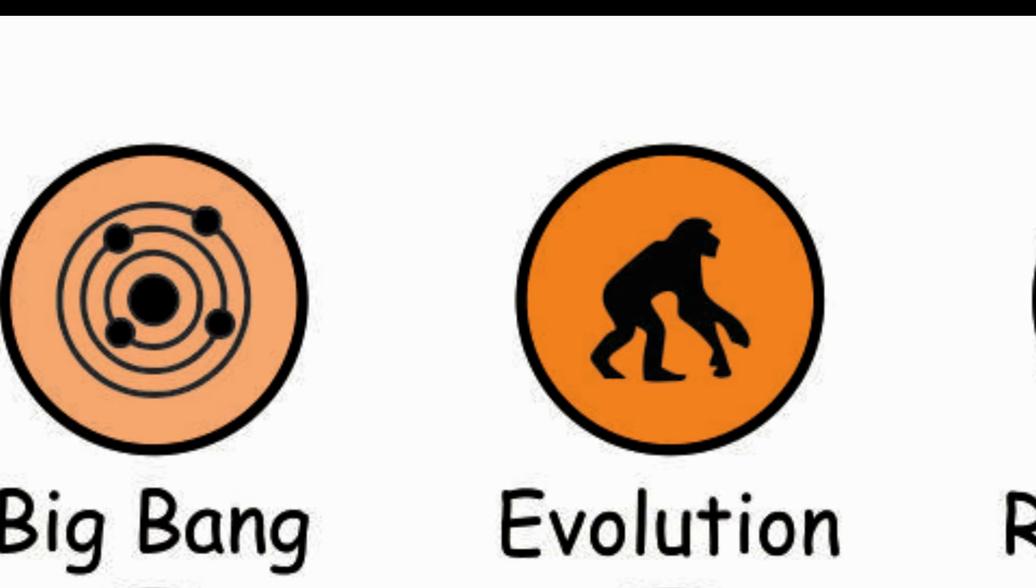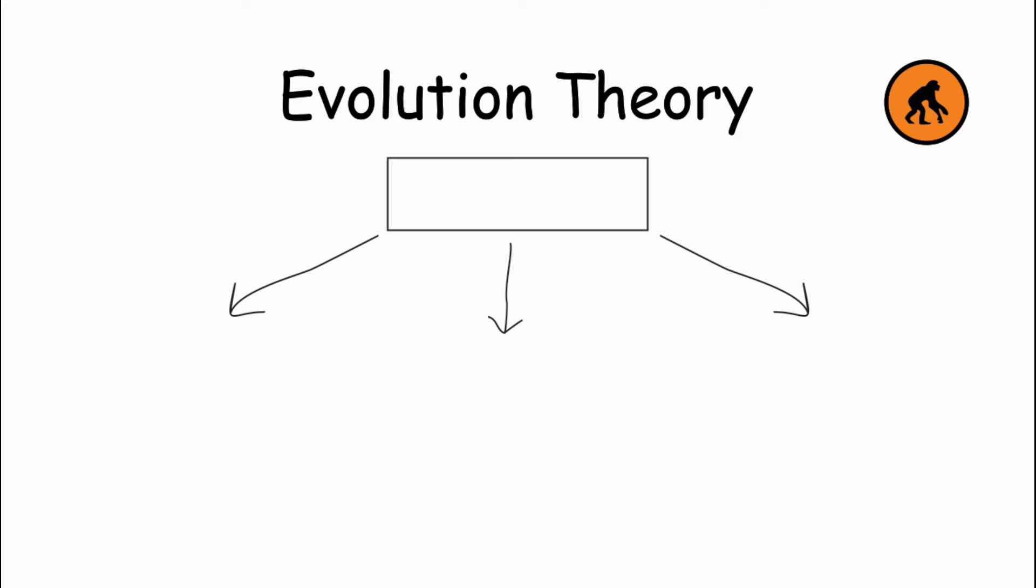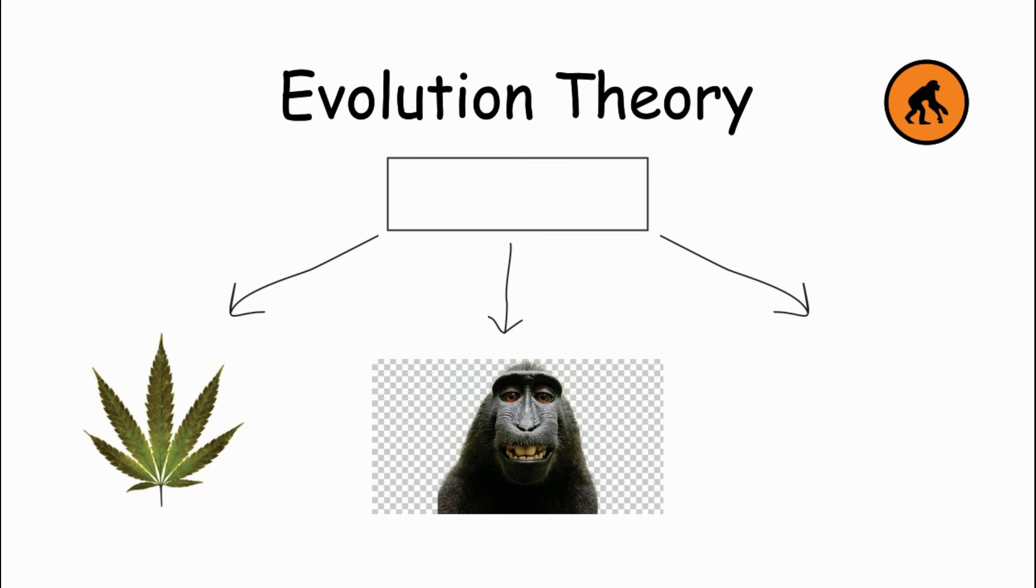The Evolution Theory: Imagine a big family tree with branches that represent different species of plants, animals, and other living things. According to the theory of evolution, all living things share a common ancestor, and they changed or evolved over a long period of time.